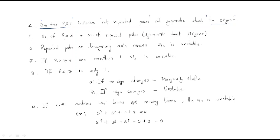Point five: the number of ROZs equals the number of repeated poles symmetric about the origin. If the ROZ repeats — for example, if a second ROZ occurs — that means another two poles are added symmetrically. If the row of zeros repeats, the poles must be symmetric above the origin.